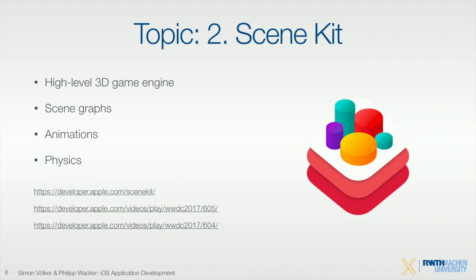The next topic is SceneKit. SceneKit is a framework from Apple that is a very high-level 3D engine. You can place 3D objects and set a camera position — it's similar to Unity. It's very high level, so you have really abstract objects. For example, if you want to load a 3D object, you can just load the file and interact with it. You can do physics and animations. It's based on the scene graph environment. I've also included some links in the slides, including WWDC talks about these specific topics.